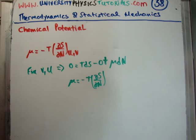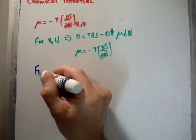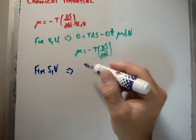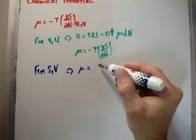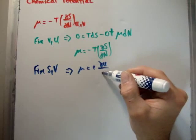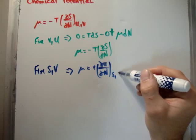But what happens if we this time instead fix the entropy and volume? Well, this time I'll let you do the derivatives yourself. You're going to find that the chemical potential is equal to plus ∂U/∂N at constant entropy and constant volume.